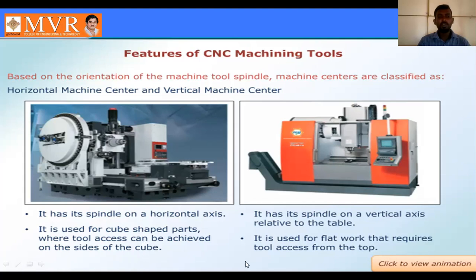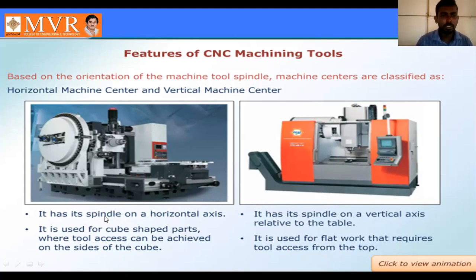The vertical machining center is used for flat work that requires the tool axis from the top. The horizontal machining center is used for cube-shaped parts where the tool axis can be achieved on the side. That is the major difference between the horizontal and vertical machining centers.